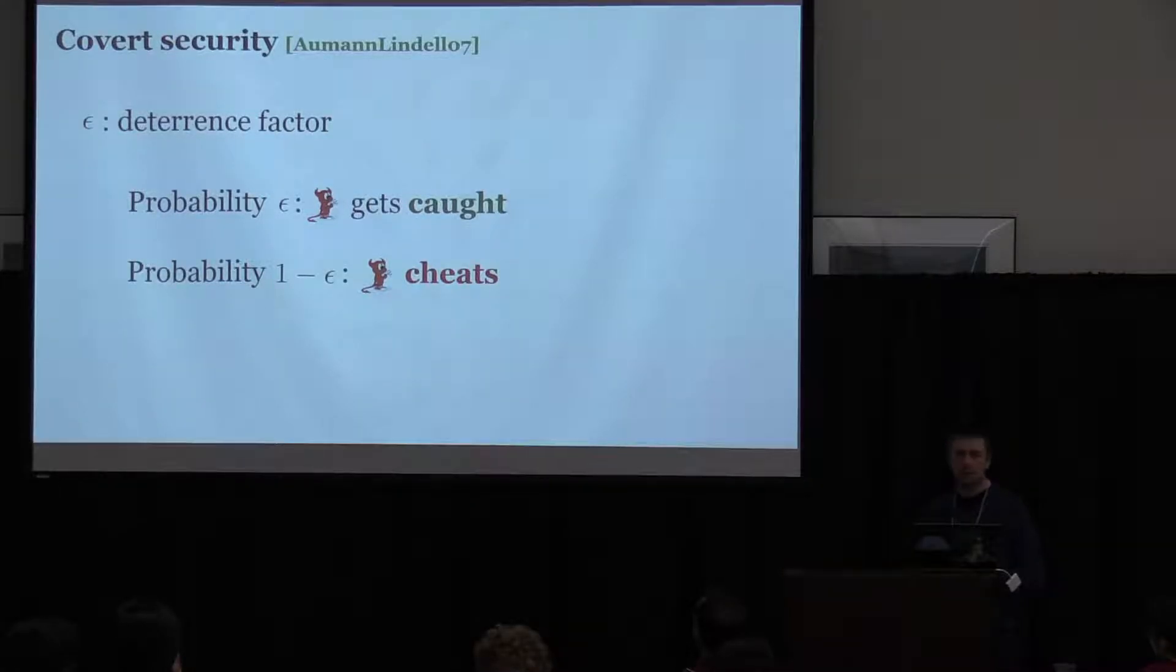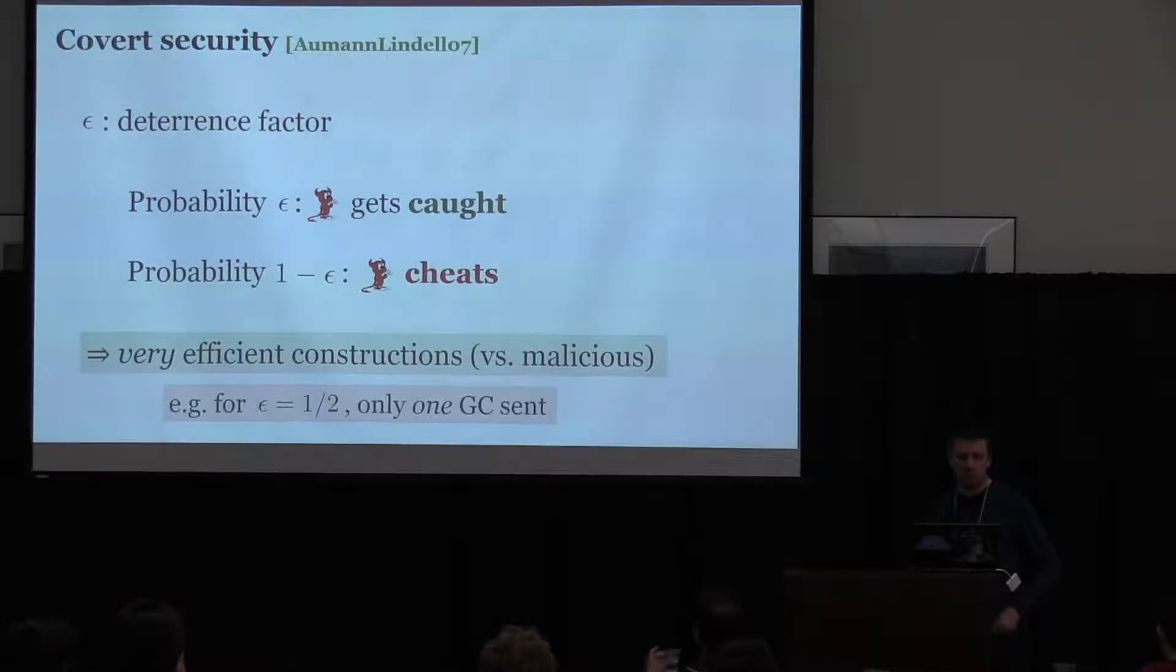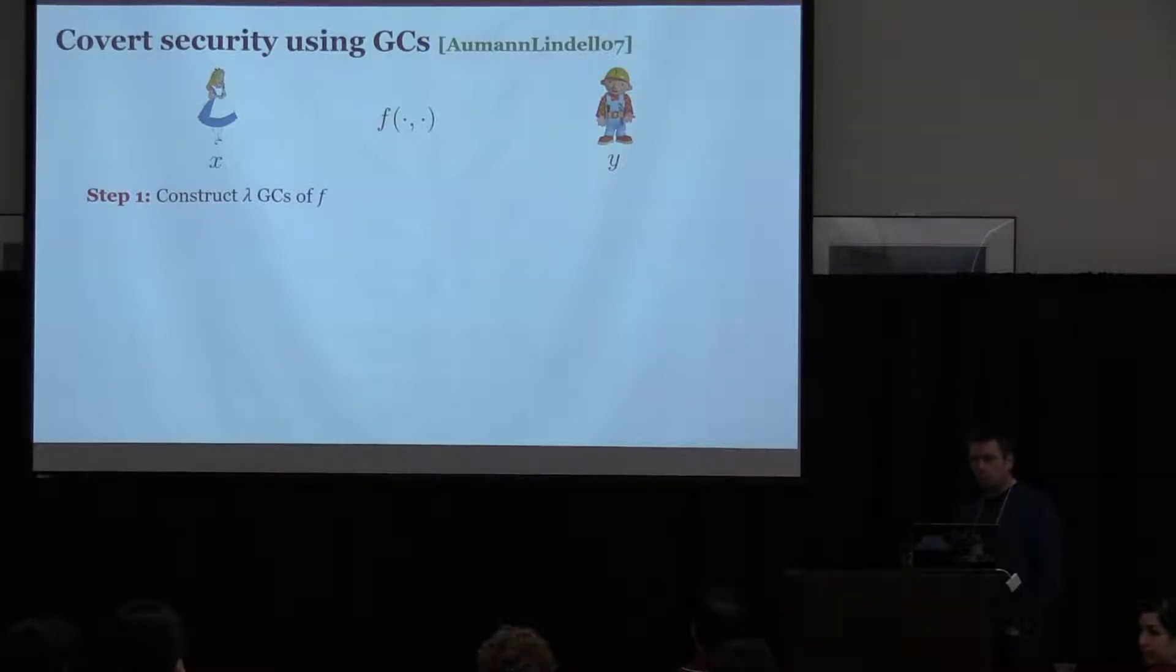And the probability one minus epsilon, she's able to cheat. And the point of this model is a trade-off with efficiency and much more efficient constructions are possible in the covert model compared to malicious. So how does it work? It's kind of a simplified or the kind of the most naive or most natural way of cut and choose protocol that you can do to achieve this covert security. Because this public verifiable covert security, the topic of this, I'm going to briefly review of how the covert works.